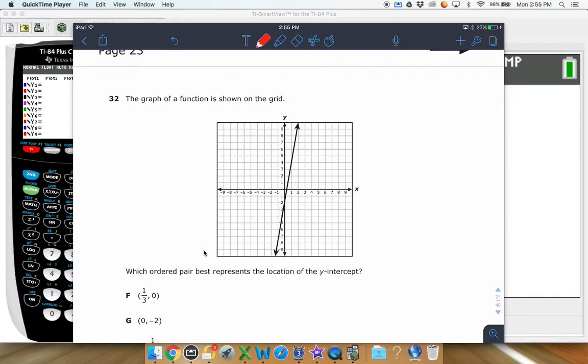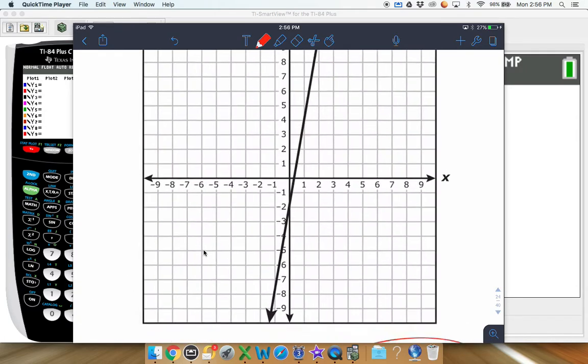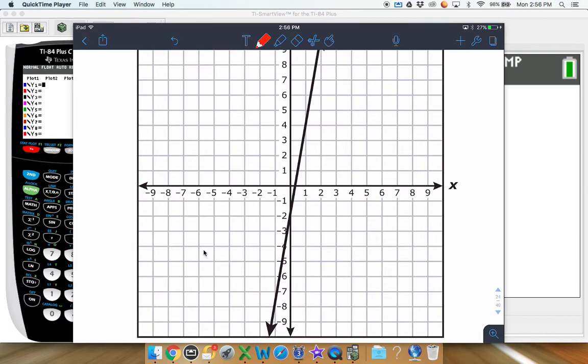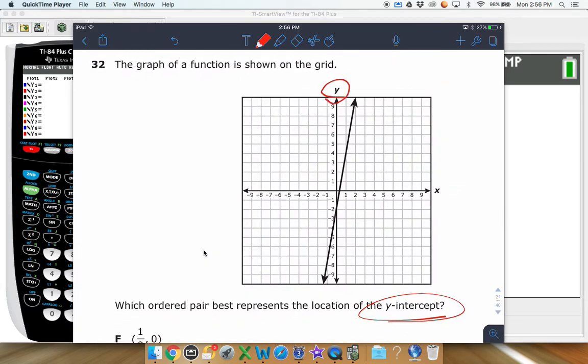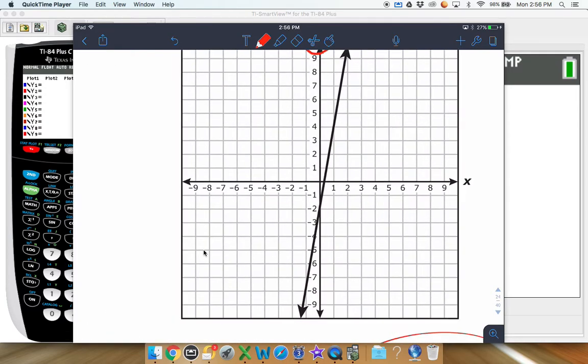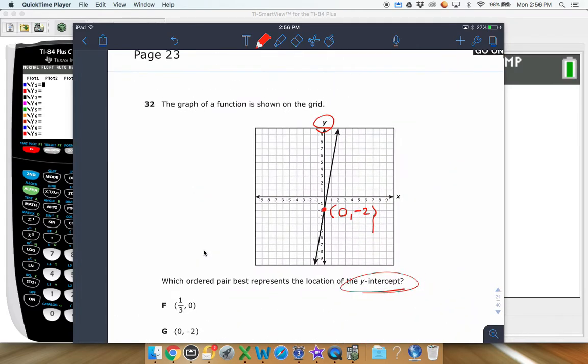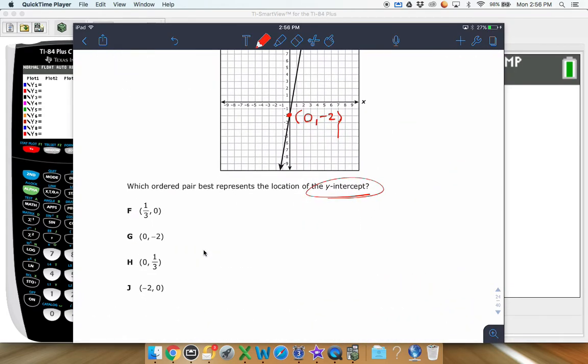Alright. Next one here, this one's pretty straightforward. The graph of the function is shown on the grid, which order pair represents the location of the y intercept. So if we're looking here at this graph, the y intercept is where it crosses the y axis right here. So the graph crosses the y axis. It looks like right around right there. So that looks at like down two units right there. And that order pair that pairs up with that, that's 0, negative 2. So it's got to be G.